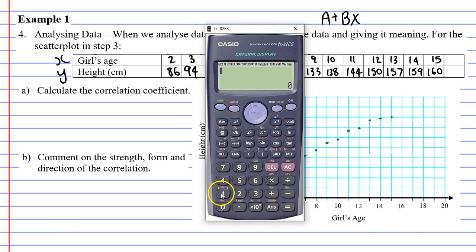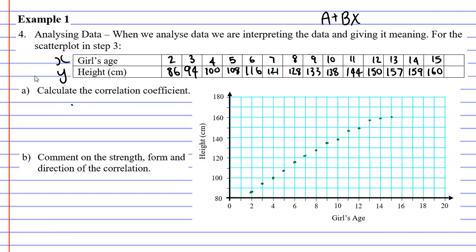So we go shift 1 where it says stat, and we want to go to REG, which is number 7, and we want the correlation coefficient, which is the pronumeral R, number 3. Okay, so we get 0 point, let's do three decimal places, 0.994. 0.994, and that's a positive number, and we can see that because as the girls get older, the heights go up.